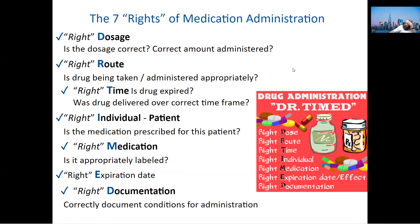These are called the seven rights of medication administration — if you go to medic school, you'll be tested on this over and over. You don't have to learn it for your EMT test, but always remember: you need the right patient, the right drug, the right expiration, the right dose, and the right documentation.